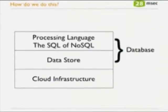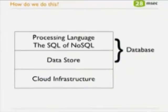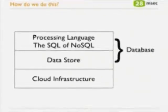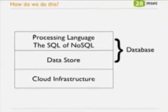What I want to show you is something that allows you to really efficiently build data-intensive web applications. How we do this: first, we need a processing language capable of handling JSON, XML, and text — everything. We call it the SQL of NoSQL. We also need a scalable data store that works in the cloud and handles lots of data. Those two things together are actually called a database. And of course we want to run all of this on some cloud infrastructure — private cloud, hybrid cloud, or public cloud.